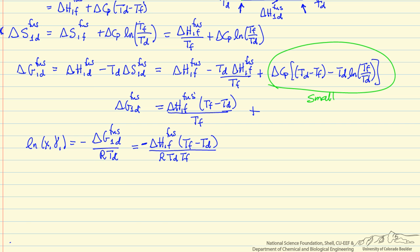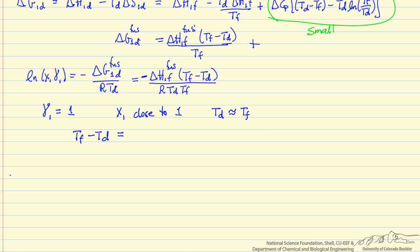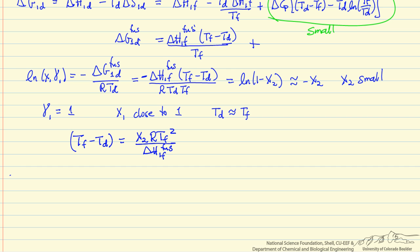Now we make further simplifications. First, the activity coefficient is approximately 1, which is a good approximation when x1 is close to 1. Second, in the denominator we approximate Td as equal to Tf, since the freezing point depression is not large in general. Finally, log(x1) equals log(1 minus x2), which is approximately equal to minus x2 when x2 is small — this is a standard mathematical approximation.